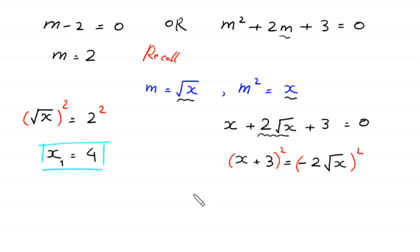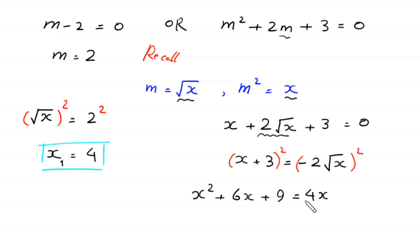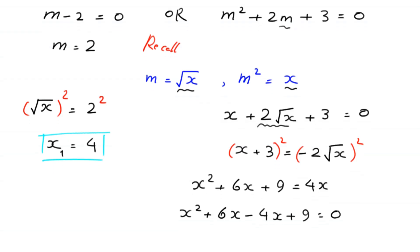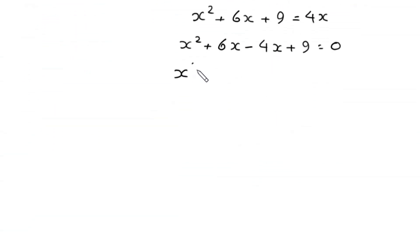Squaring gives x plus 3 whole squared equals x squared plus 6x plus 9, and the right side becomes 4x. Moving 4x to the left side, we get x squared plus 6x minus 4x plus 9 equals 0, which simplifies to x squared plus 2x plus 9 equals 0.